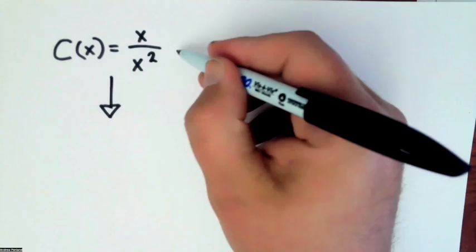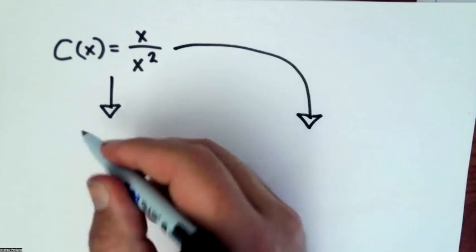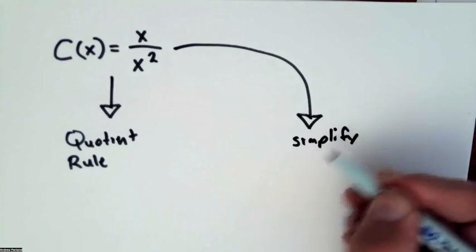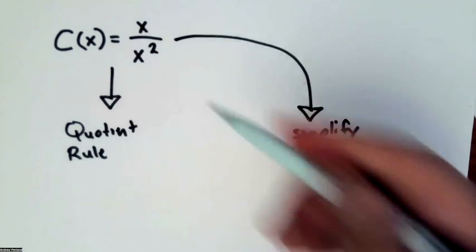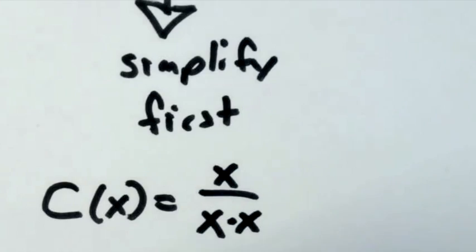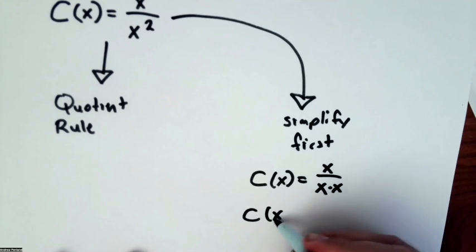C of x is equal to x over x squared. So there are two ways we can do it. We can do quotient rule or we can simplify. So if I wanted to simplify this first and I looked at x over x squared, I could rewrite this as x over x times x. And then if I do that, what do I end up with?